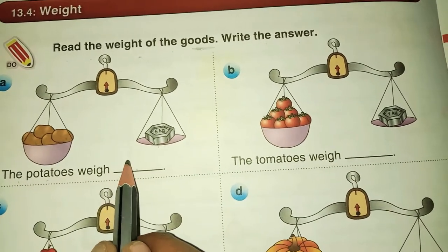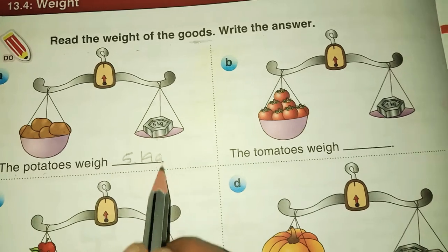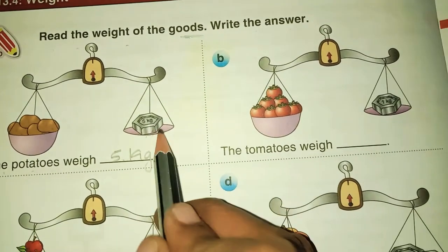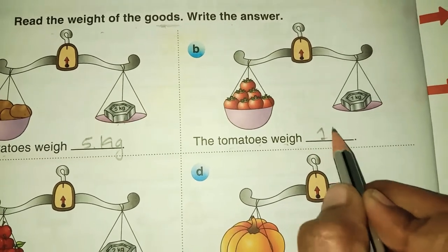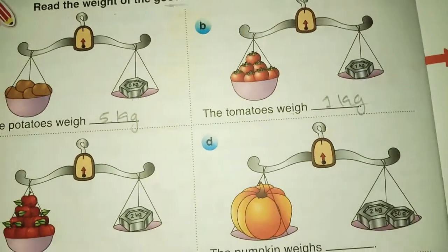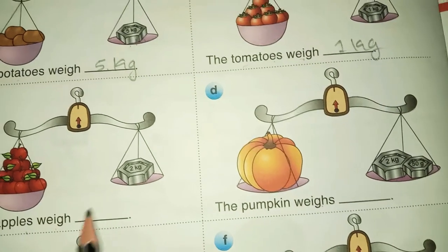The potatoes weigh 5 kg. See here, 5 kg standard weight is there. The tomatoes weigh 1 kg. Next, the apples weigh 2 kg.